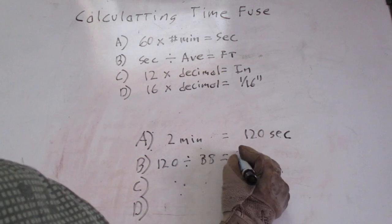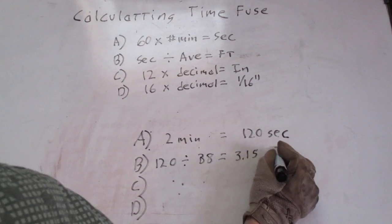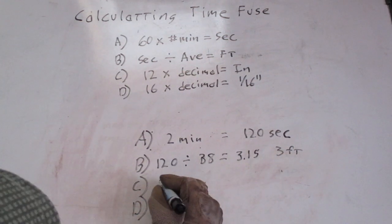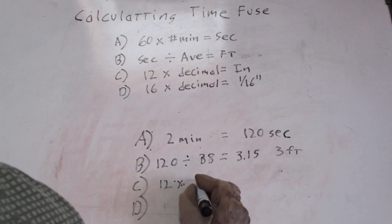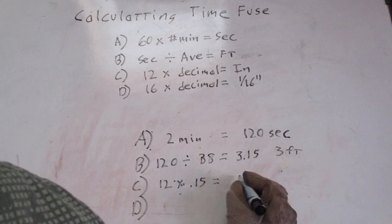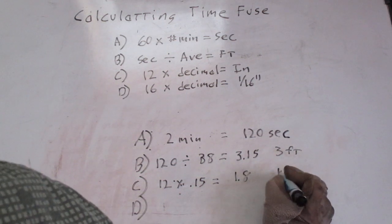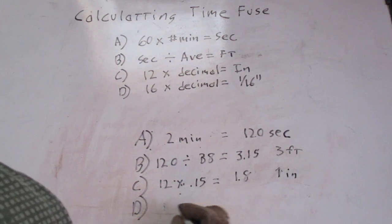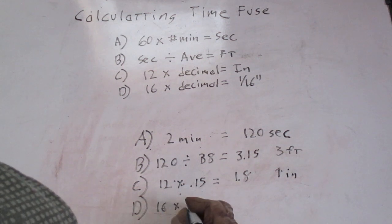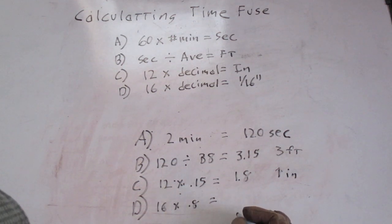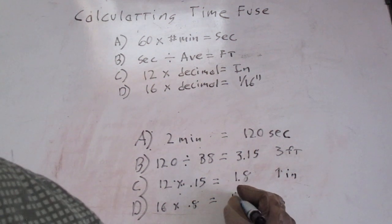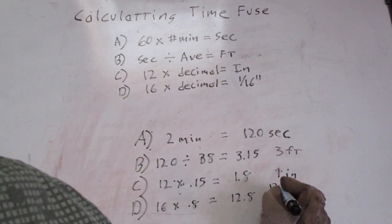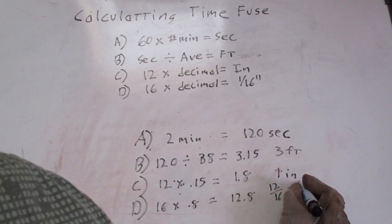We take our decimal times it by 12. So 12 times 0.15, we end up with around 1.8, so we get one inch. We take our decimal times it by 16. So 0.8 times 16, and we end up with 12.8. At this point the decimal disappears, we drop it off. So we take our 12 and that's 12/16ths or three-quarters of an inch.